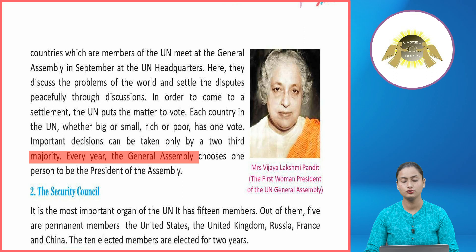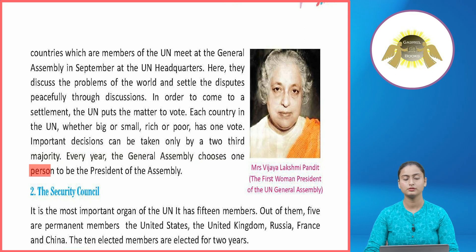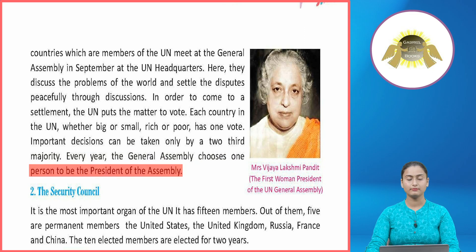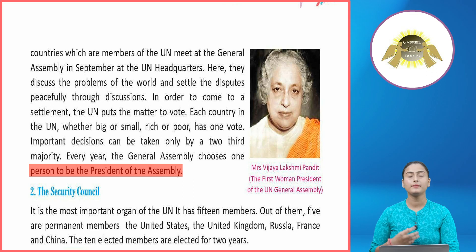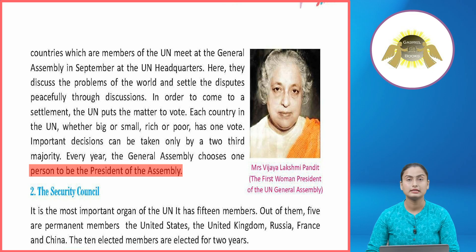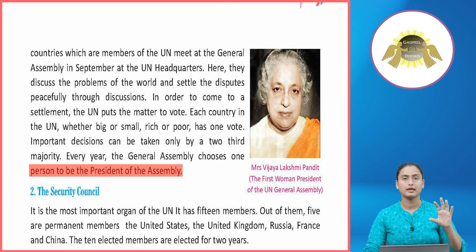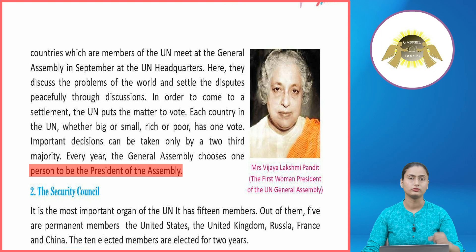Every year the General Assembly chooses one person to be the president of the assembly. General Assembly mein jo important discussions hote hain — ki kis tarikay se kya karna hai — wo yahan decide kiya jata hai. Sab se important matter ko sab ke aage rakha jata hai aur fir voting hoti hai.